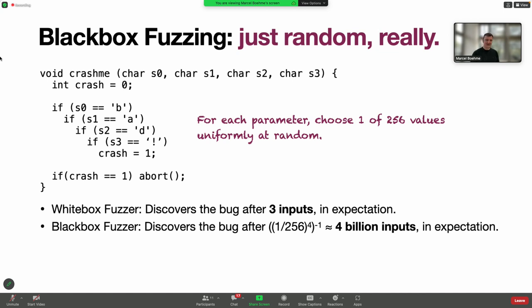If we look at this from a statistical perspective, white box fuzzing requires about three inputs in expectation to find that bug. Black box fuzzing, if we sample each character uniformly at random, we would expect to generate about four billion inputs before discovering this bug. Sounds a lot. So white box fuzzing should be better, right? Most effective and efficient. And here is where it's going wrong for the first time.